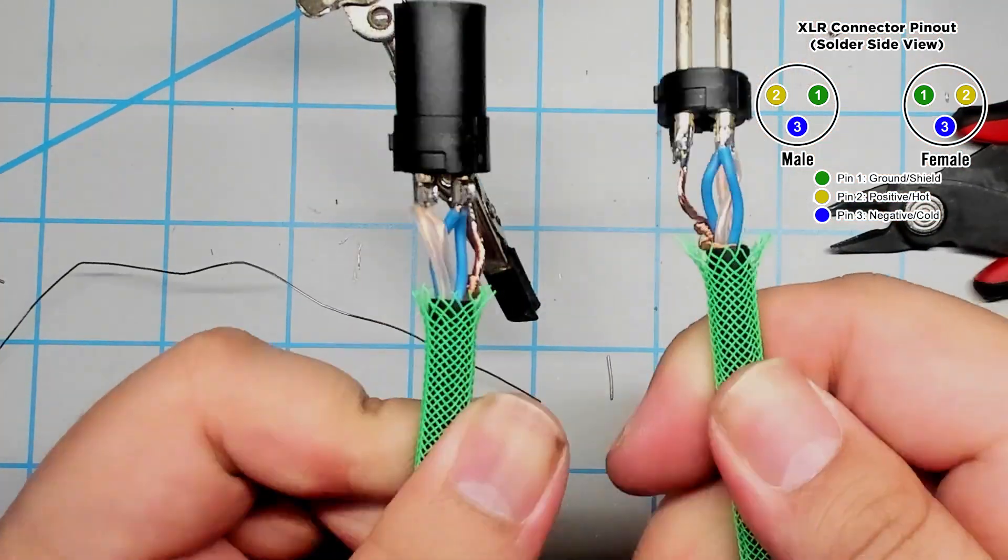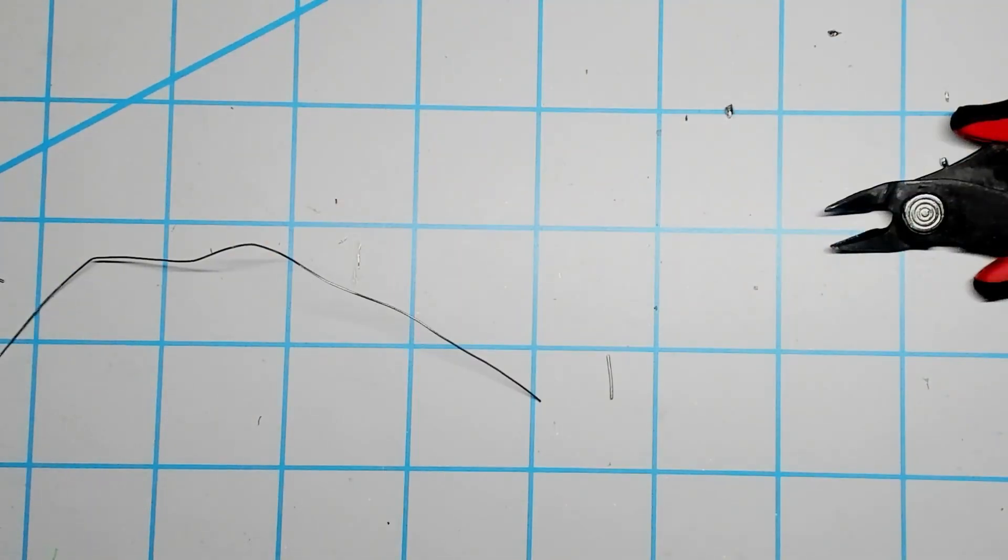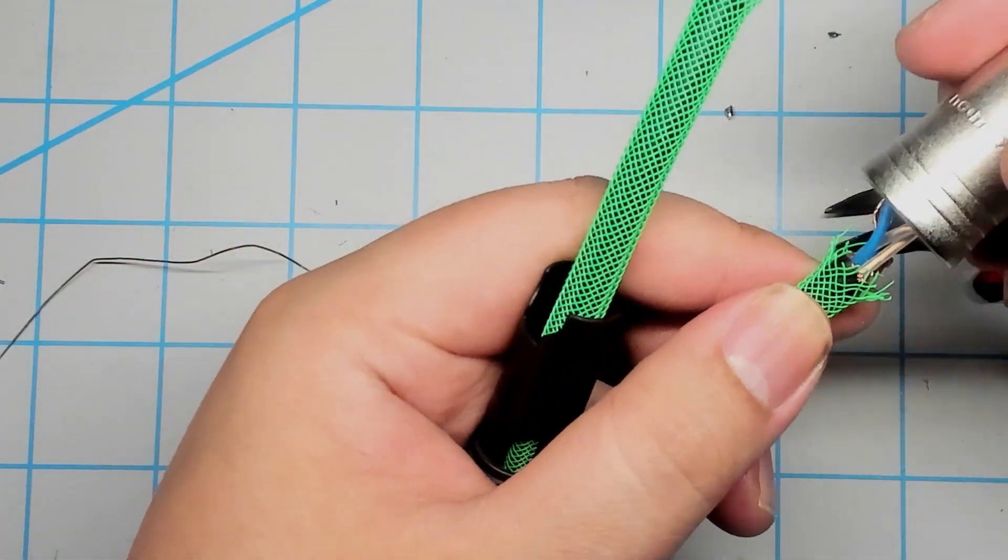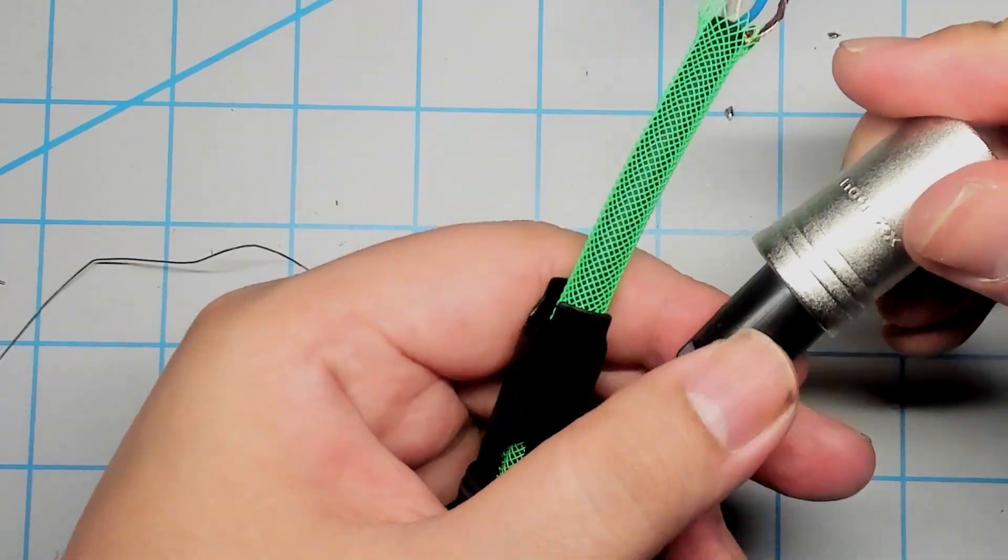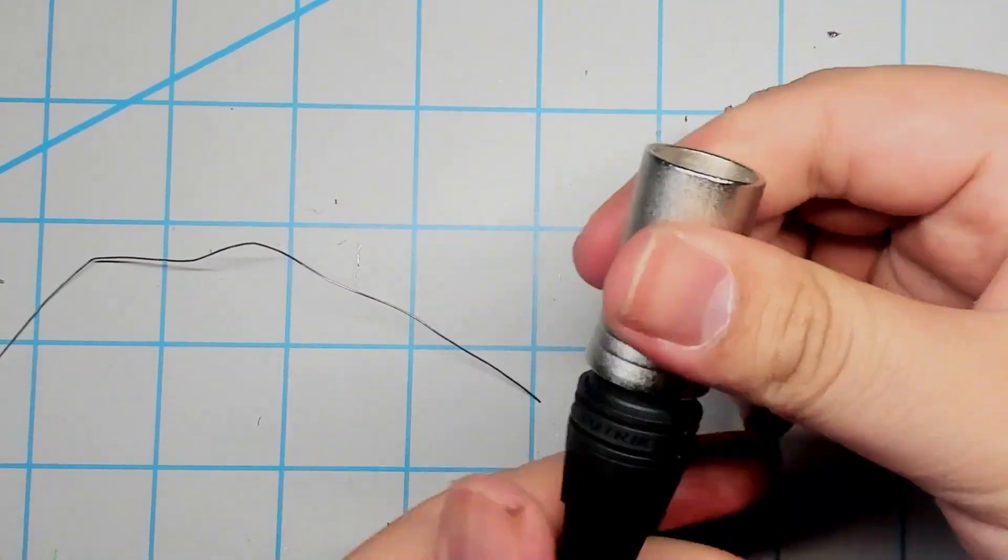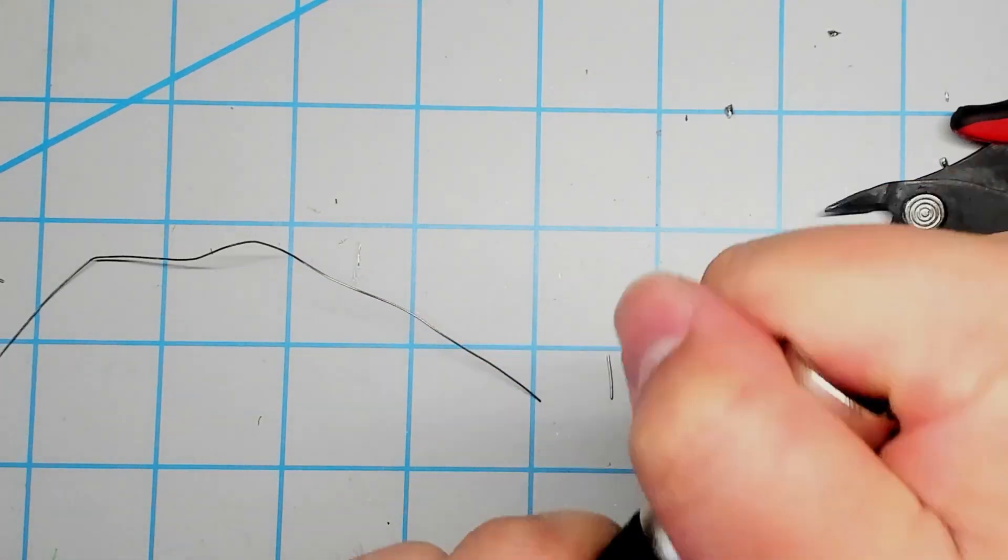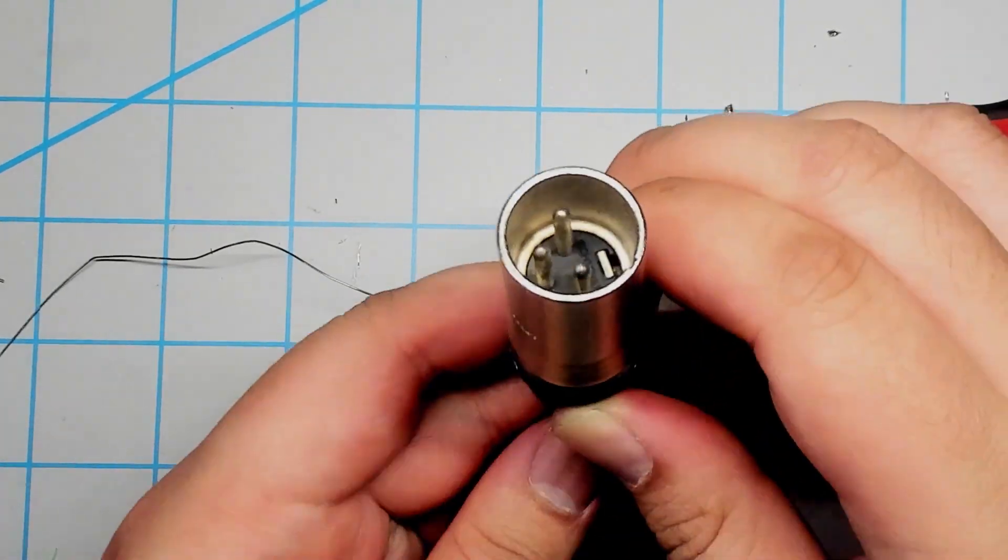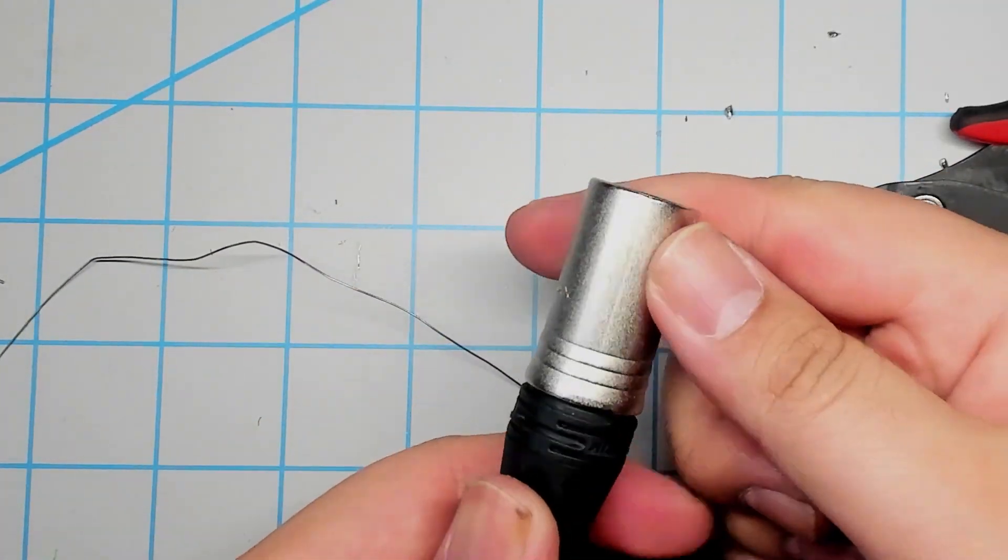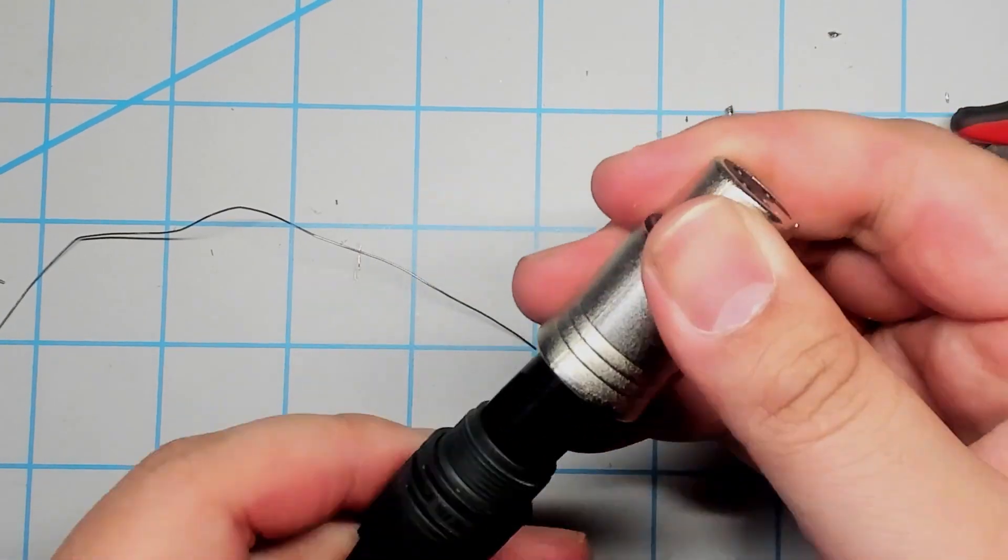And here we have our connectors fully soldered. Now all that's left to do is to put the connector housings back together. I add the metal housings to the corresponding connector, pull up the black cylinder part and spin it around till it fits into place, then I'll bring up the black rubber end and screw it into the metal housing. And this pretty much wraps up the process of building our sleeved balanced XLR cable.